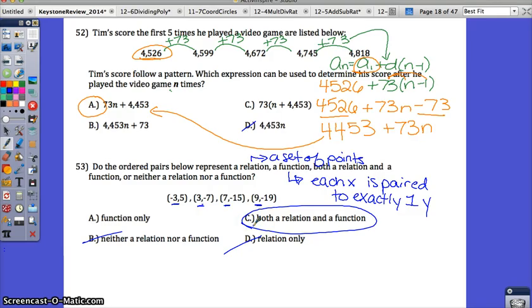Let me give you an example of where it wouldn't be a function. If I added on one more point and I had 3, 4, now you can see that the 3, the x being 3, would repeat and they have different y values, so that would not be a function. If the x values repeat, it is not a function. But in this case, all the x values are unique. They are each paired to exactly one y. 53 is a relation and a function.